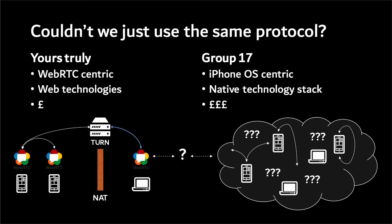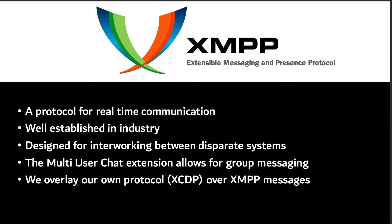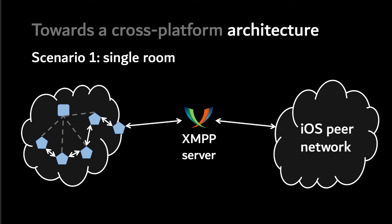One obvious question would be: couldn't we just use the same protocol? Unfortunately, our architectures are quite different. We use WebRTC, a widely supported web-specific technology, to make peer-to-peer connections between websites, while the other group uses more of a native iOS stack. The XMPP protocol is an industry-standard way for apps to communicate on different servers through often disparate interfaces. We use XMPP to communicate to a central server to mirror our data for other people to consume — an architecture with an XMPP server in the middle enabling interoperability and mirroring of stroke data between both sides.